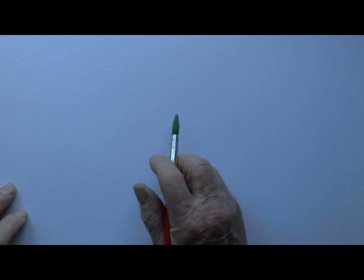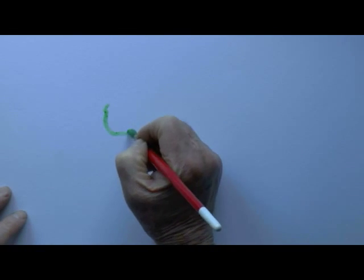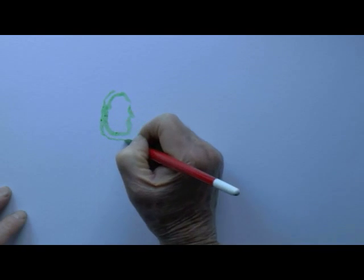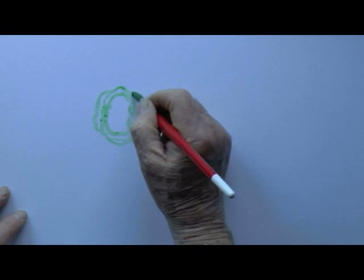OK, let's start the drawing. I've got some green watercolour paint on the brush, so we'll draw a rough outline of the lettuce.